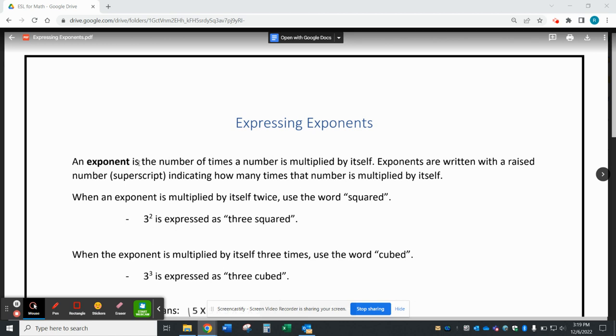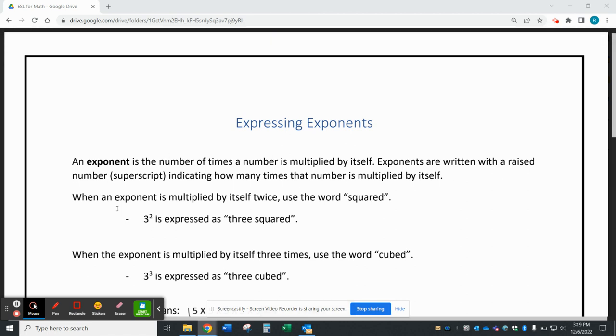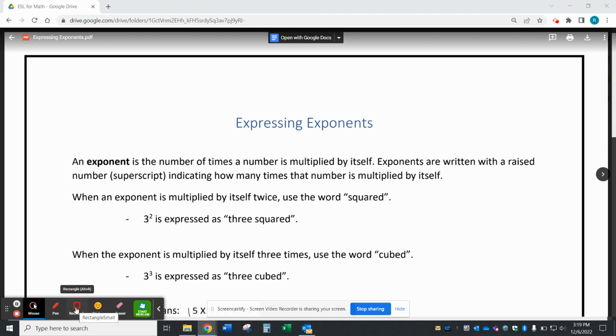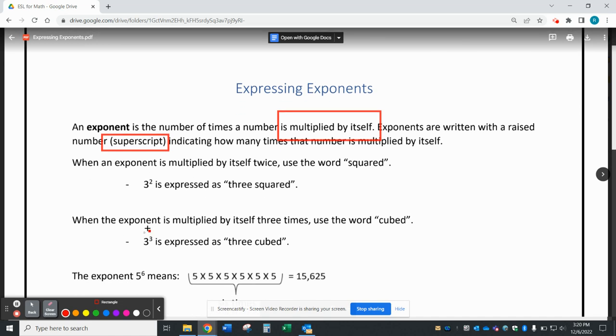An exponent is the number of times that a number can be multiplied by itself. Exponents are written with a raised number, which is also known as a superscript, indicating how many times that number will be multiplied by itself.